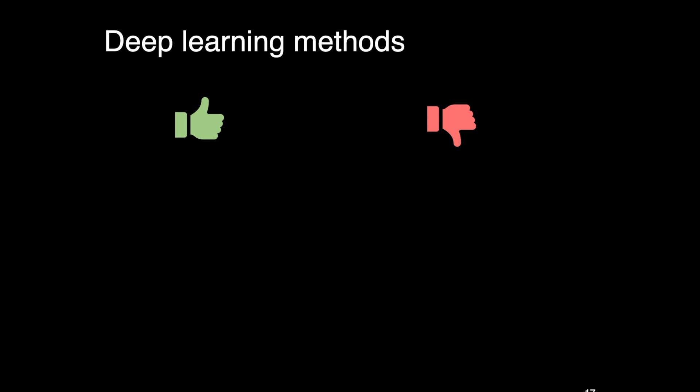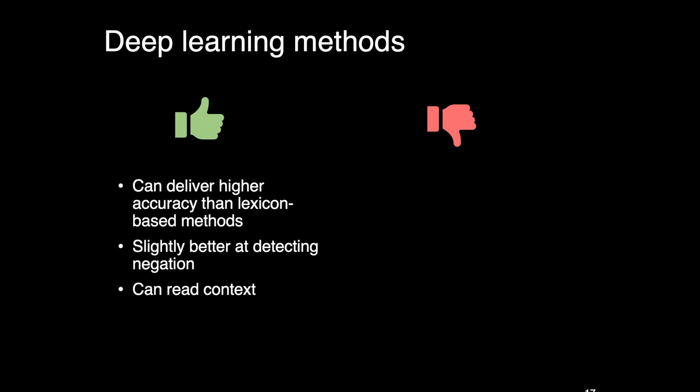Next, we will shift gear to look at deep learning methods. The pros and cons are kind of the opposite compared to lexicon-based methods. Deep learning methods can sometimes deliver higher accuracy compared to lexicon-based methods. And it is slightly better at detecting negation, although many algorithms still struggle with it. It can also do a better job at reading context and understanding sarcasm.